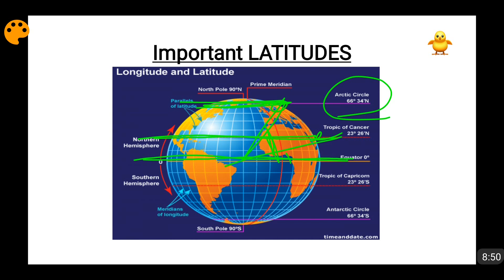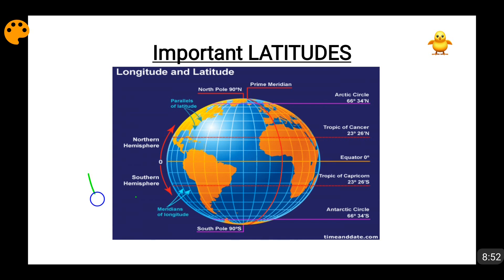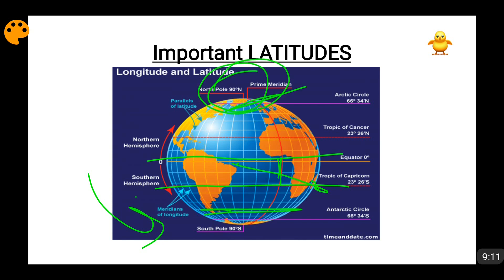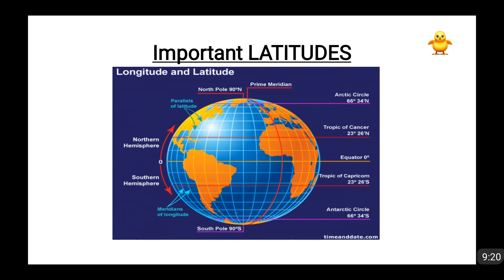Similarly, when we go in the southward direction, in between this becomes the Tropic of Capricorn — measuring this point connected to the center of the earth gives 23 degrees 26 minutes. The same goes for the Antarctic Circle at 66 degrees 34 minutes. The North Pole will be 90 degrees and the South Pole will also be 90 degrees, because connecting those points to the center of the earth makes a 90 degree angle. So the five important latitudes to keep in mind are: equator at 0 degrees, Tropic of Cancer and Tropic of Capricorn at 23 degrees 26 minutes, and Arctic Circle and Antarctic Circle at 66 degrees 34 minutes.